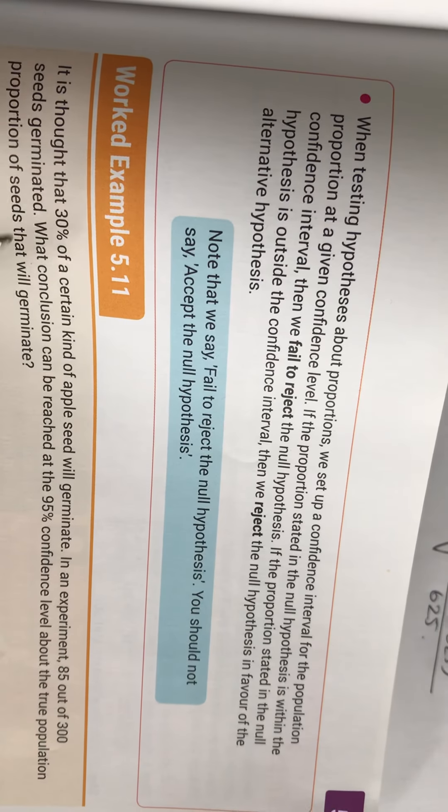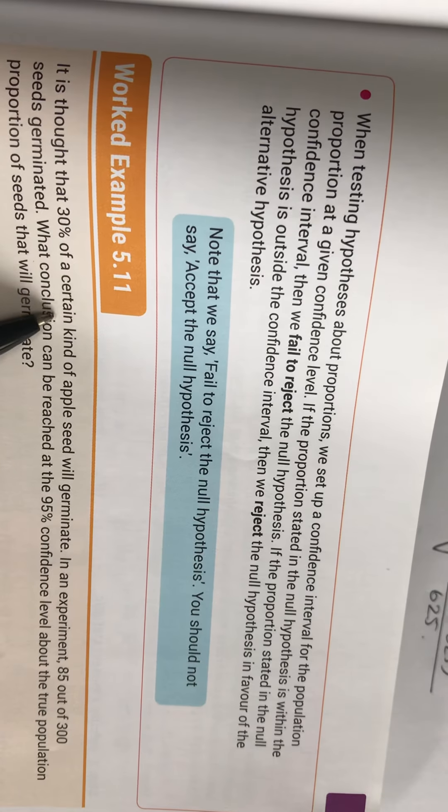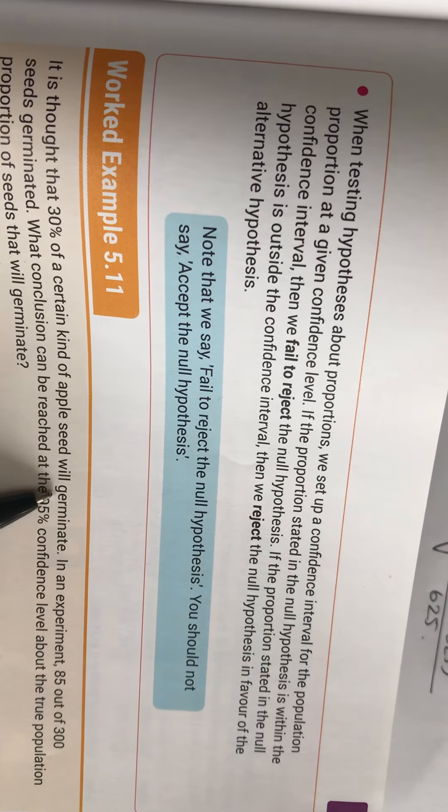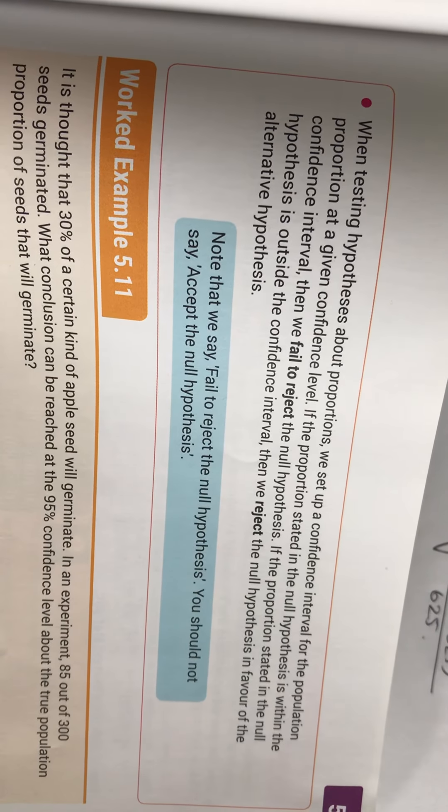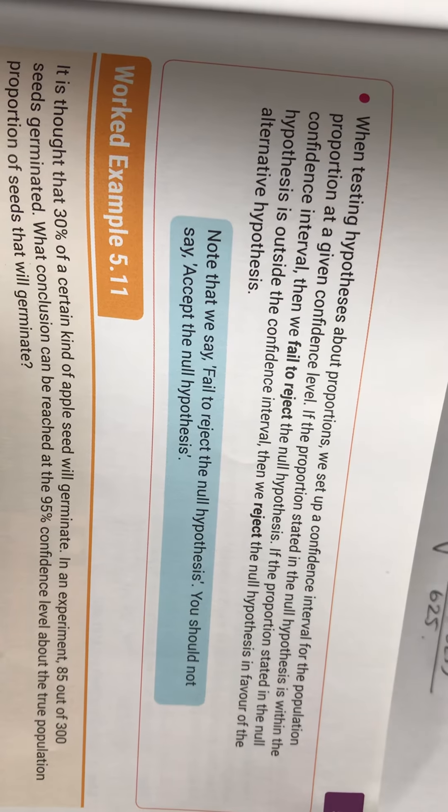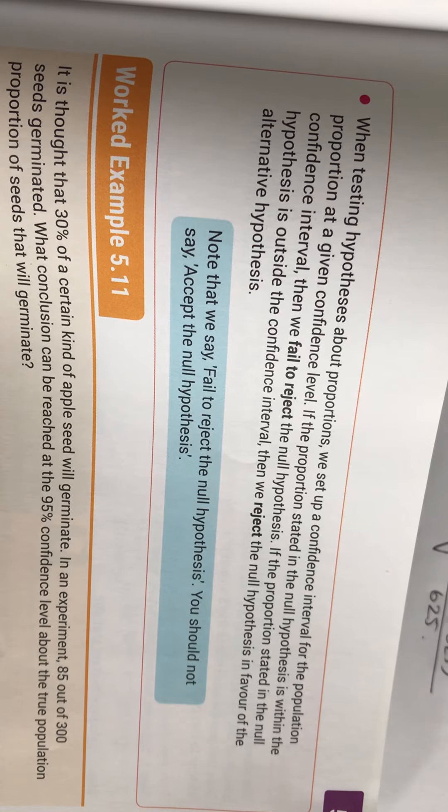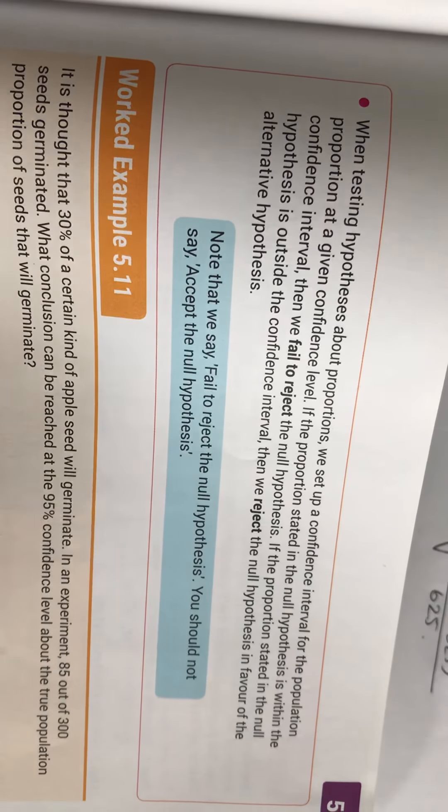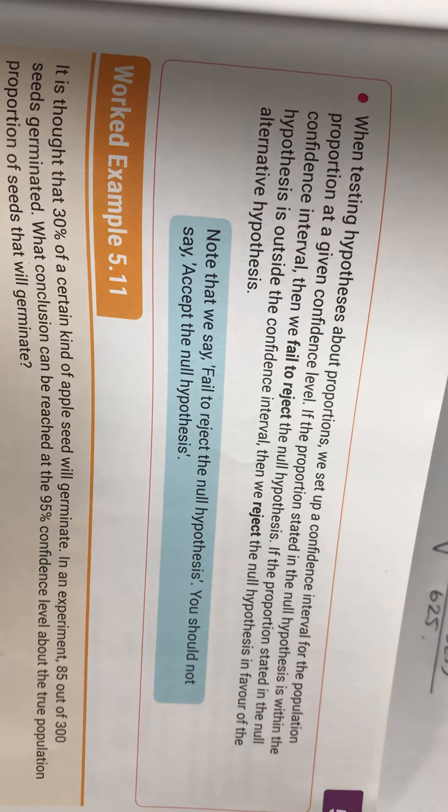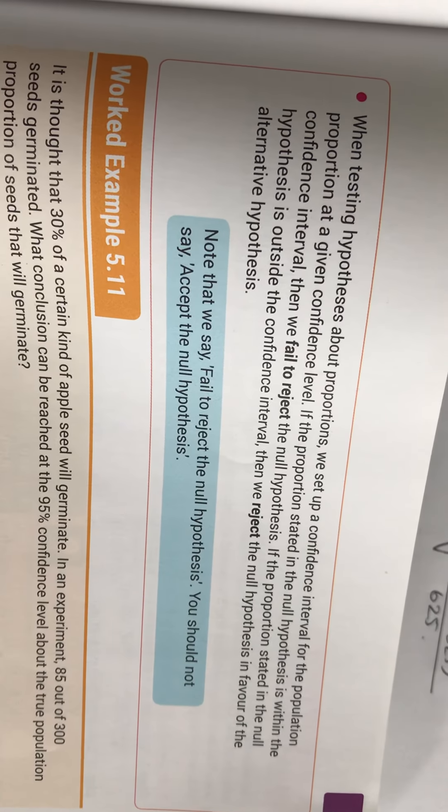Your null hypothesis has to have just one statistic in it. So it looks like in this situation it's thought that 30% of a certain kind of apple seed will germinate. Well, that sounds like their claim. Is that a percentage that has been nailed down? Yes it is, it's 30%. So that does sound like my H0 and the claim are actually the same in this situation again.